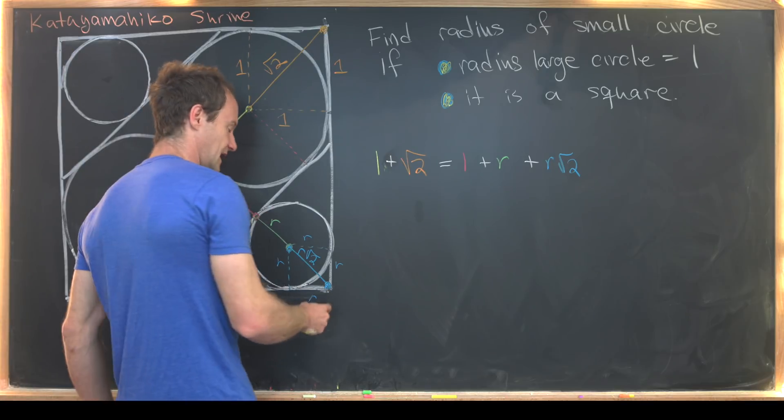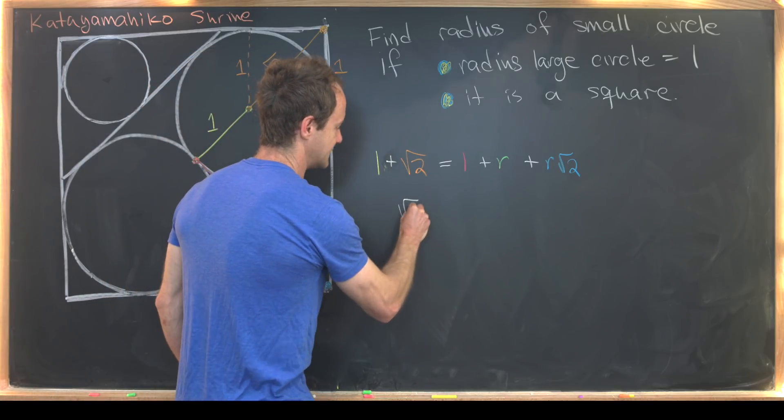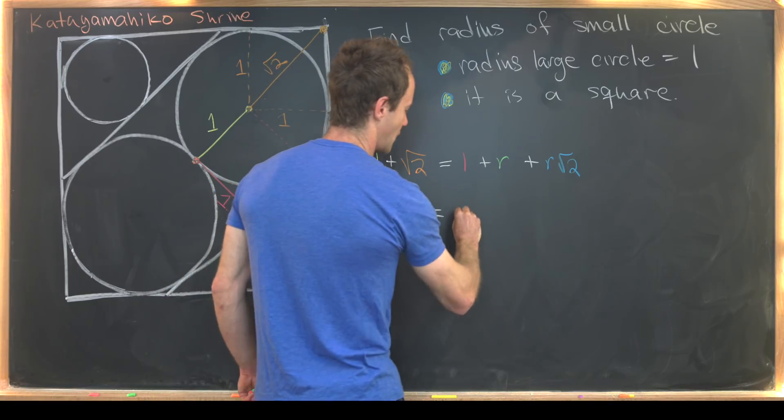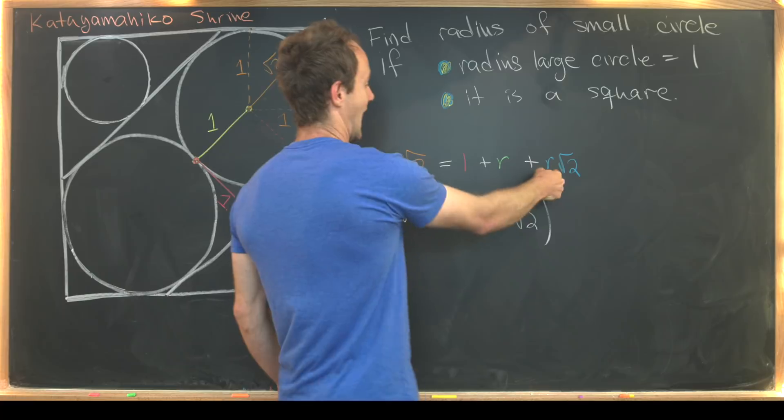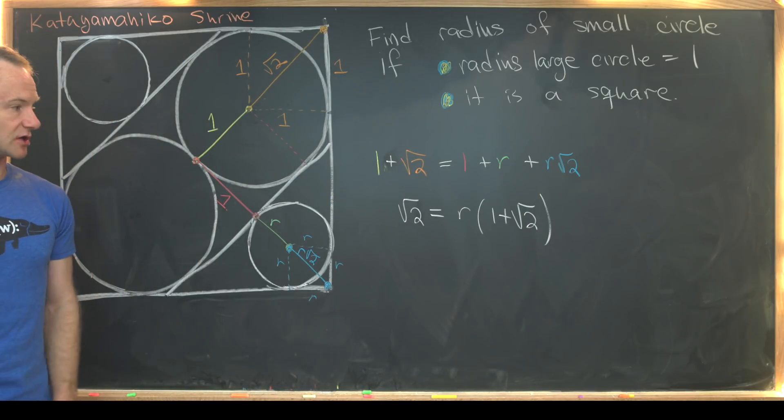Okay, so now we're ready to pretty easily solve for r. So notice that we can cancel the ones from both sides, and that leaves us with the square root of 2 equals r times the quantity 1 plus the square root of 2 after factoring an r out of those top two terms.